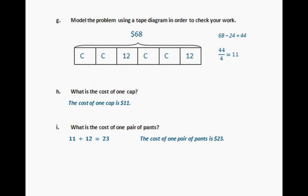So in order to draw a tape diagram, it would be C representing the caps, so you have four of them, and $12 representing the pants, and that's equal to $68. And so you figure out that the cost of one cap is $11. And the cost of one pair of pants is $23.